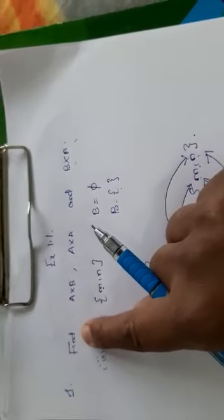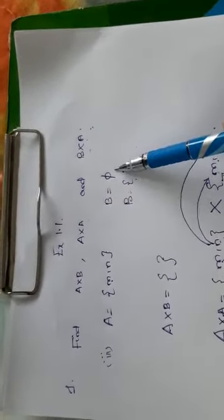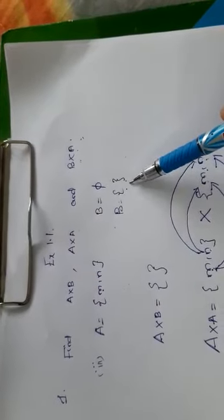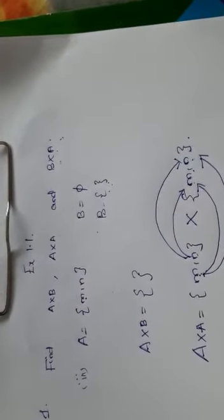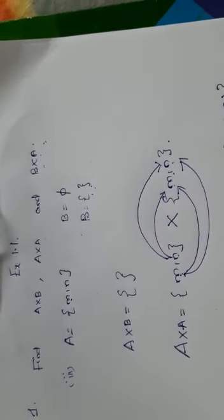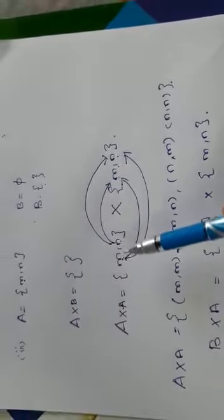Children, once again I will tell you. Look at the question: find A cross B, A cross A, and B cross A. A has elements m and n. B is null set. So if one of the two sets is null set, you will not be able to write any ordered pair. Therefore A cross B is null set. Next, find A cross A.